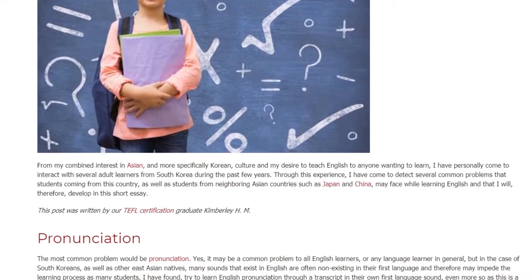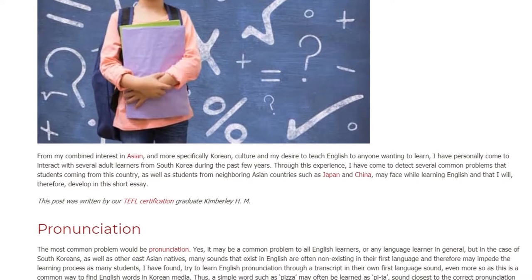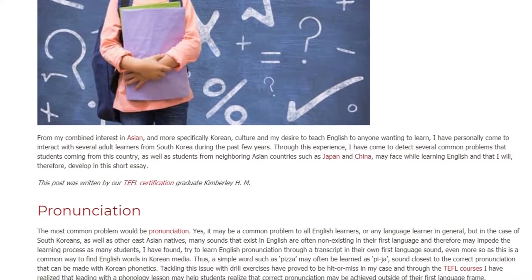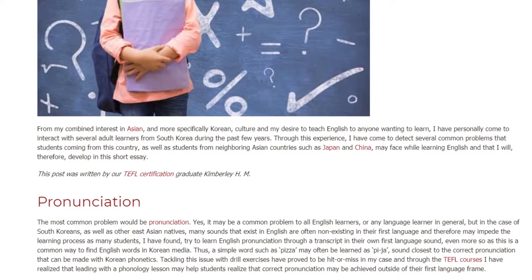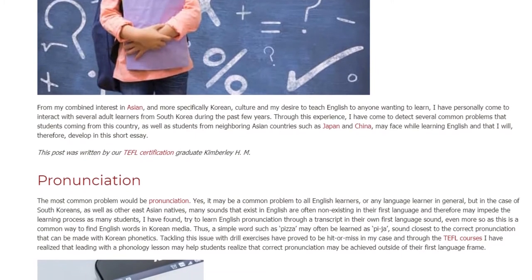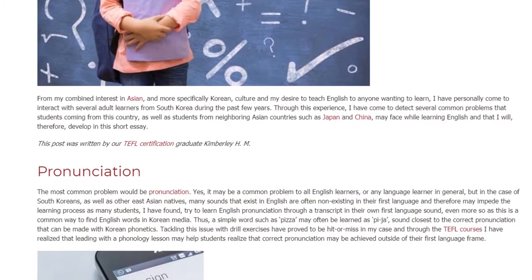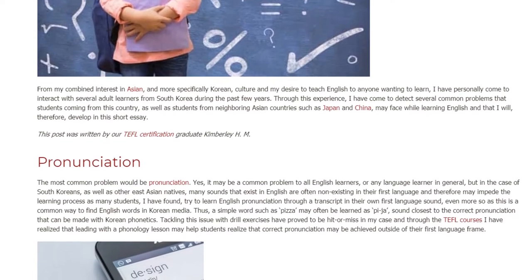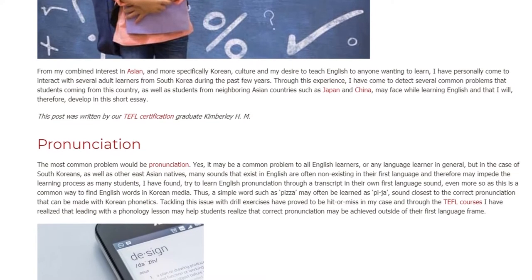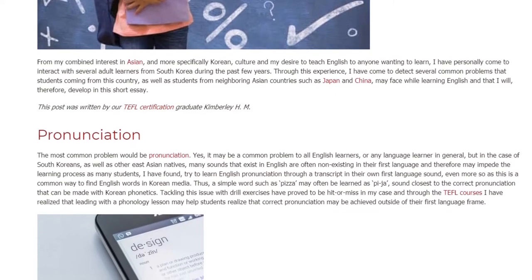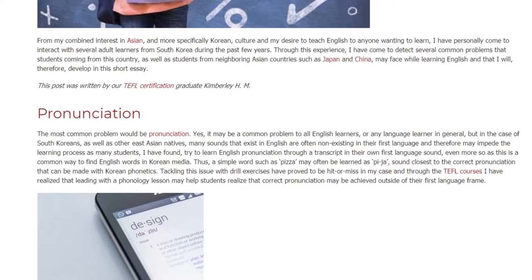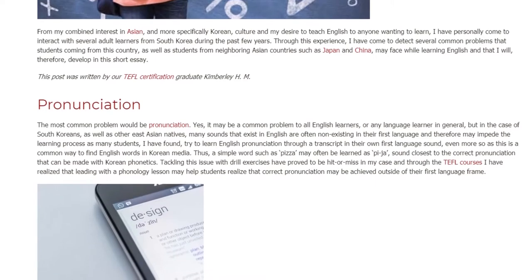Pronunciation. The most common problem would be pronunciation. It may be a common problem to all English learners, or any language learner in general, but in the case of South Koreans, as well as other East Asian natives, many sounds that exist in English are often non-existing in their first language. This may impede the learning process, as many students try to learn English pronunciation through a transcript in their own first language sounds, even more so as this is a common way to find English words in Korean media. Thus, a simple word such as 'pizza' may often be learned as 'pai-ya,' the sound closest to the correct pronunciation that can be made with Korean phonetics.